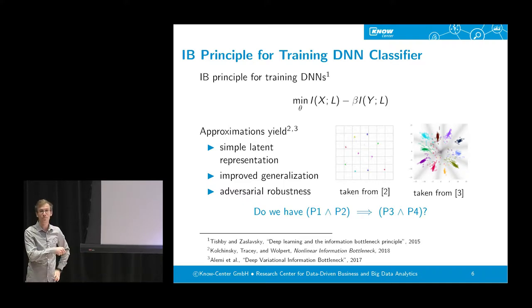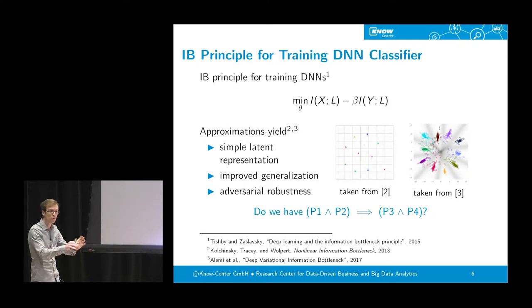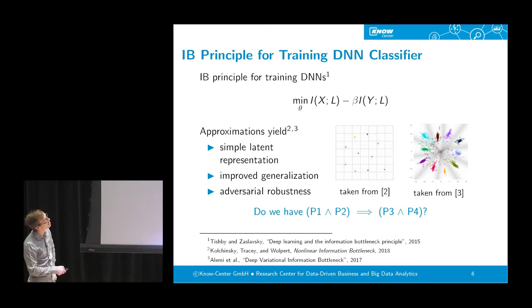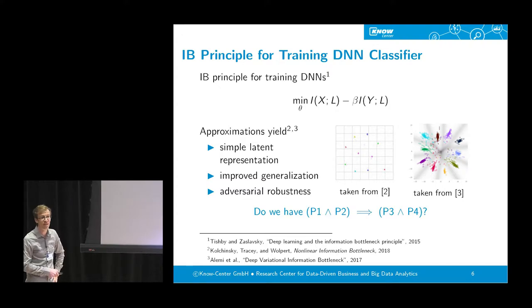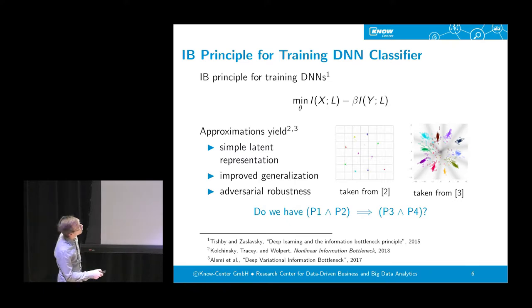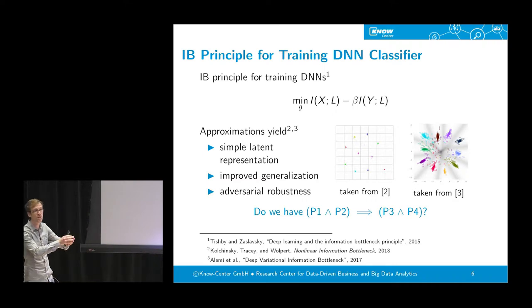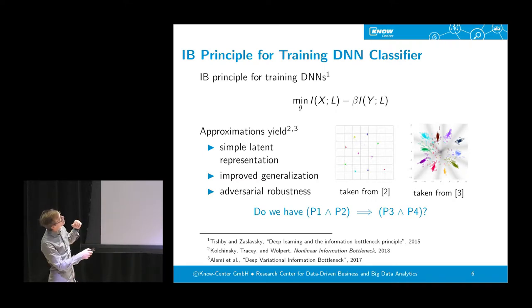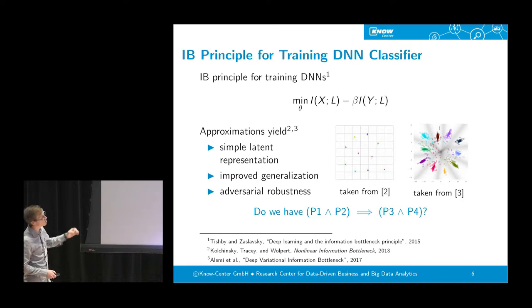There have been quite successful attempts to start with the information bottleneck functional, make a few small approximations, and end up with nice latent representations. Work from the Santa Fe Institute showed very nicely separated clusters for each digit in the MNIST dataset, and a group from Google also demonstrated separated digit clusters. In summary, by starting from the information bottleneck functional, researchers obtained simple latent representations, improved generalization performance, and claimed adversarial robustness.